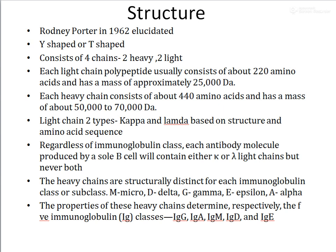The structure of immunoglobulins was elucidated in 1962 by Rodney Porter. The structure of antibodies has been found to be Y- or T-shaped. They mainly consist of four chains — two heavy chains and two light chains. Each light chain, a polypeptide, consists of about 220 amino acids with a mass of approximately 25,000 daltons. The heavy chain contains around 440 amino acids and has a mass of about 50,000 to 70,000 daltons.